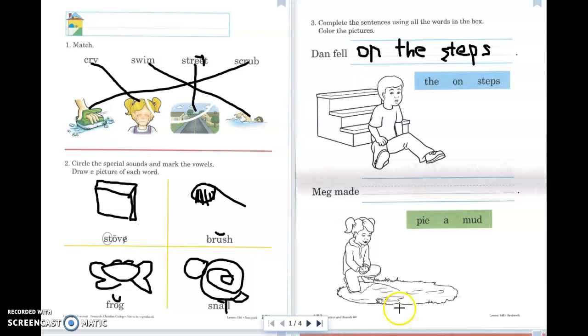This time, I have a picture of a girl, and she looks like she's playing in some mud. So the two words they give me already are Meg made.